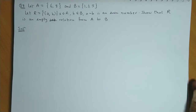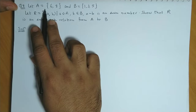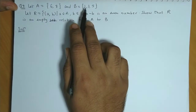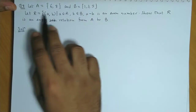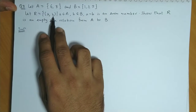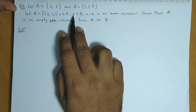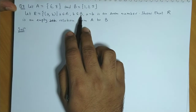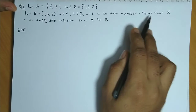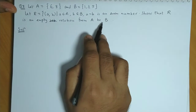Now let us discuss question number 8. Let set A contain elements 6 and 8, and set B contain elements 1, 3, 5. Let R be a relation where a belongs to set A and b belongs to set B, and a minus b is an even number. Show that R is an empty relation from A to B.